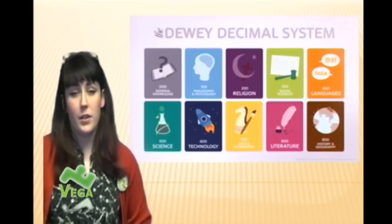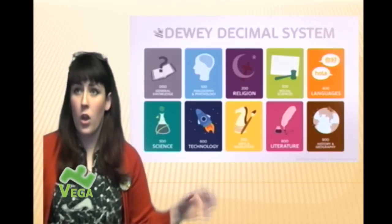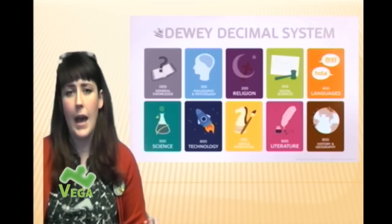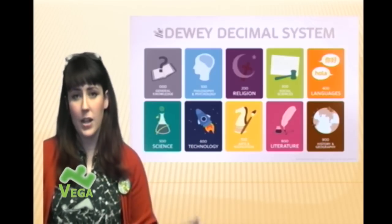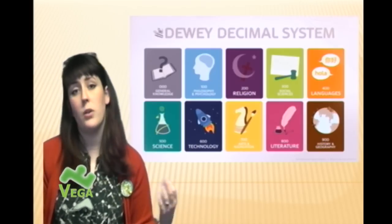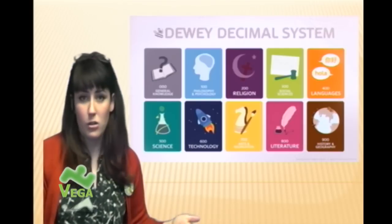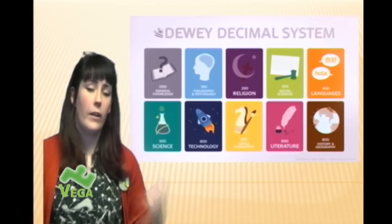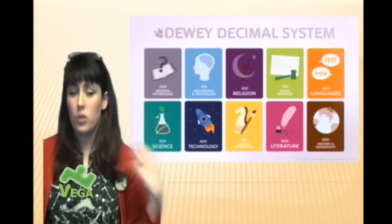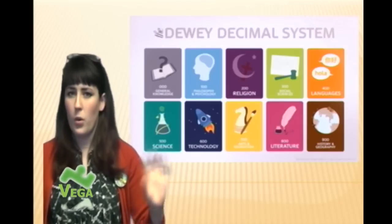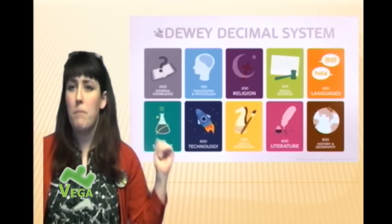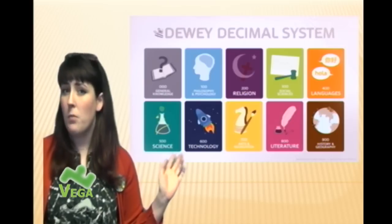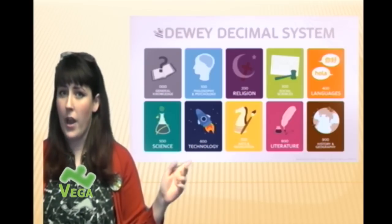So all books on a subject are together. You don't need to know all the decimal detail at the moment because we don't have the hugest collection. Imagine if you went to a library as big as a school full of history books — then you'd need more detail in the codes. But even if you just remember these 10 basic rules, that should help you to find books.